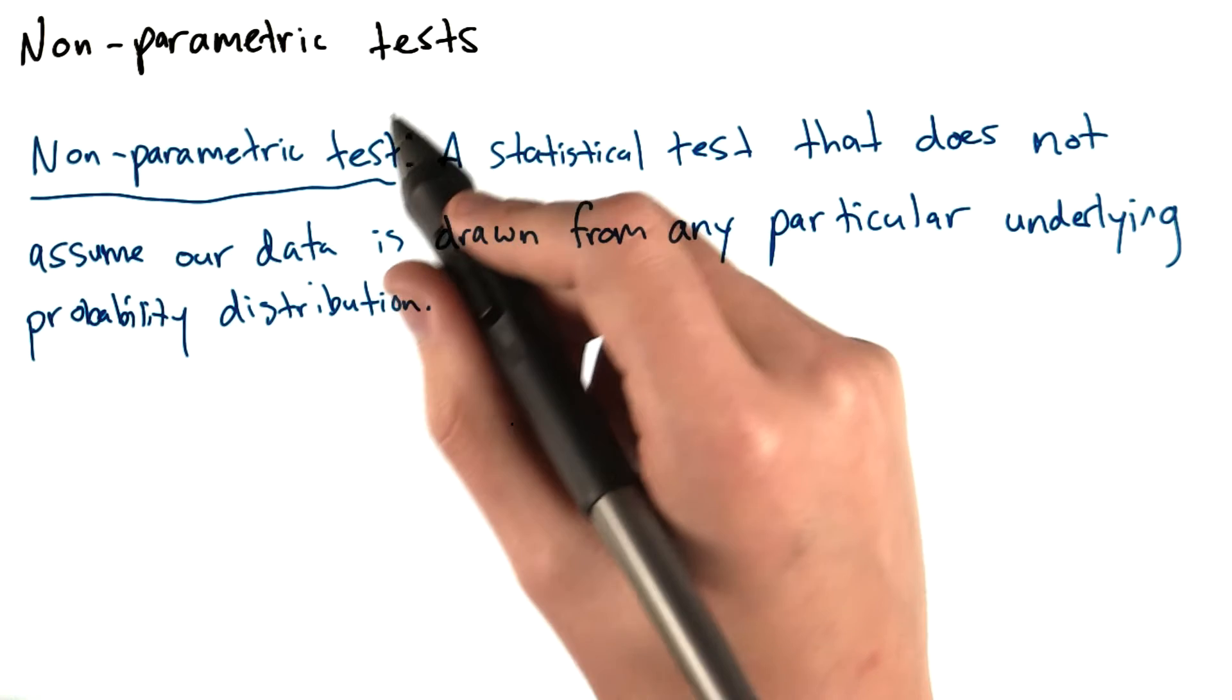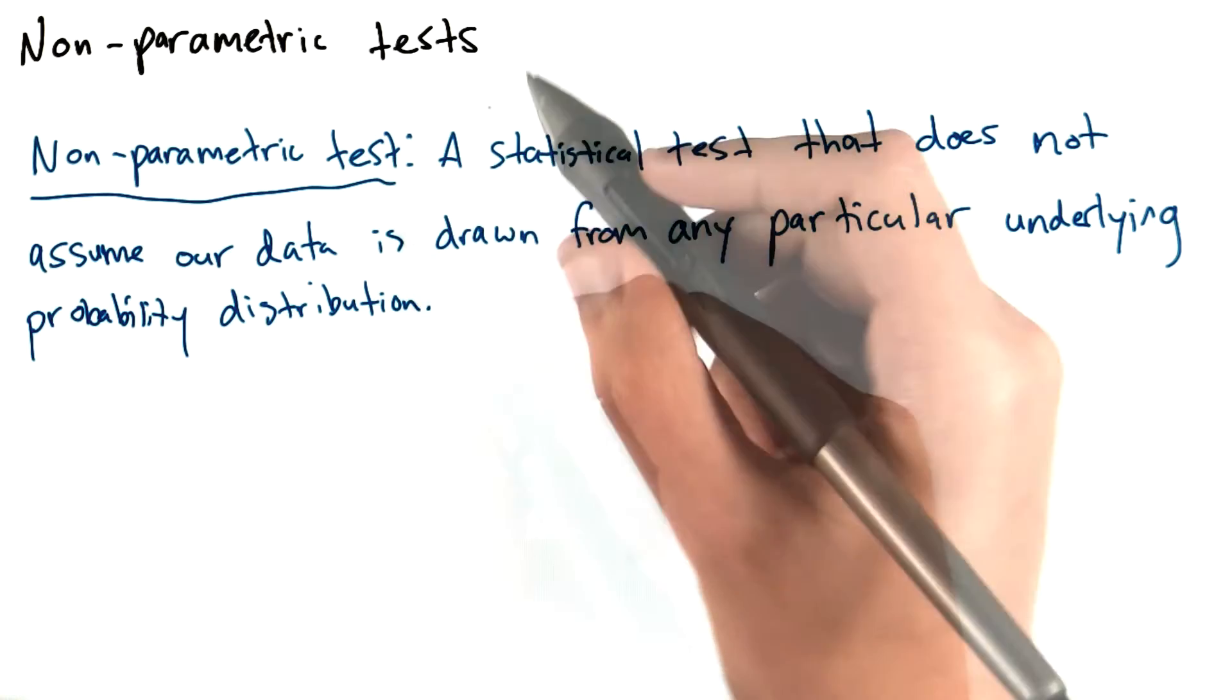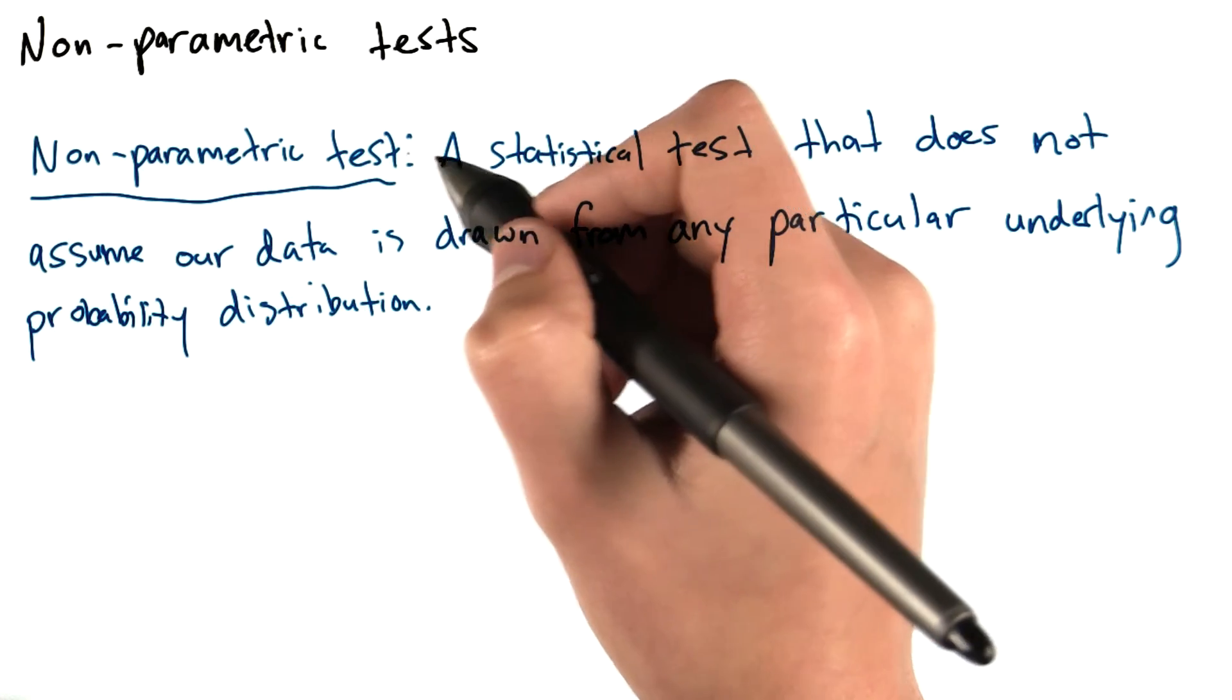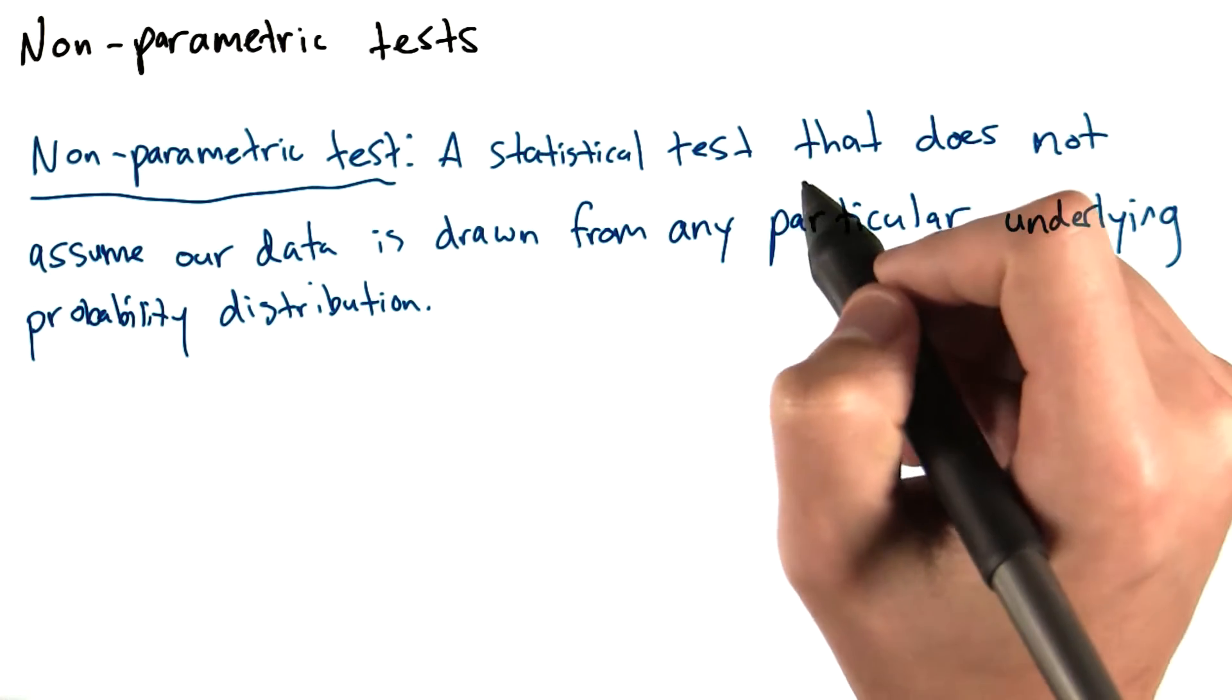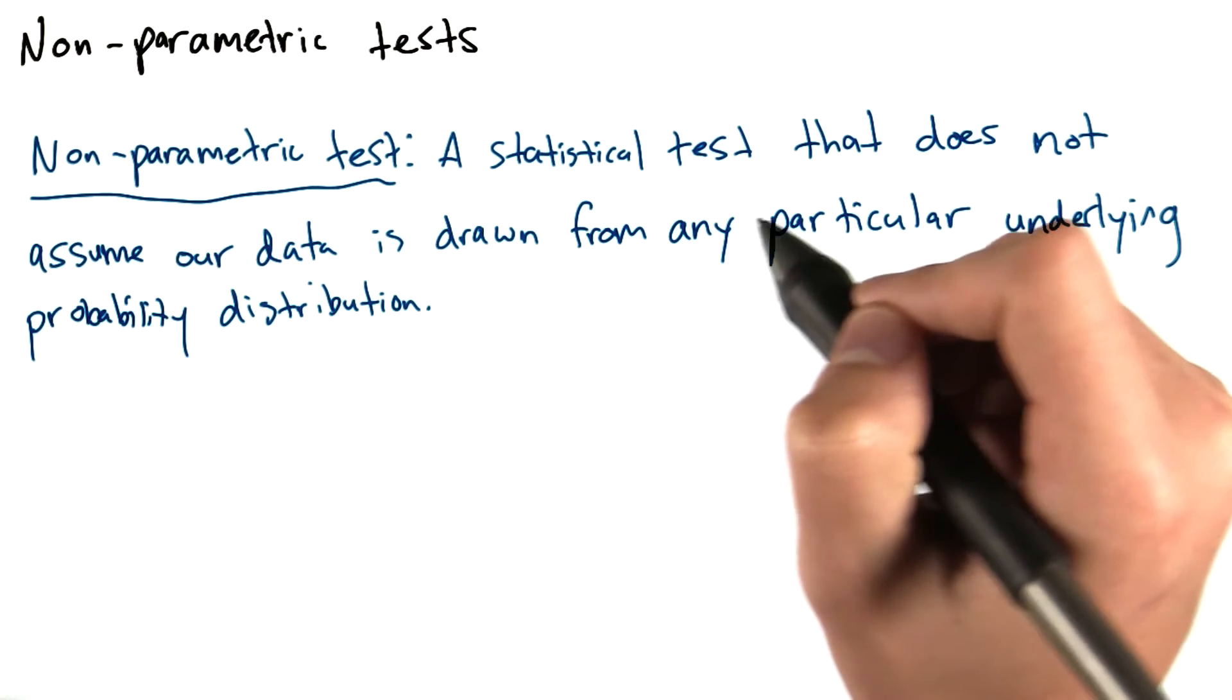But there also exist non-parametric tests that we can use to compare two samples. A non-parametric test is a statistical test that does not assume our data is drawn from any particular underlying probability distribution.